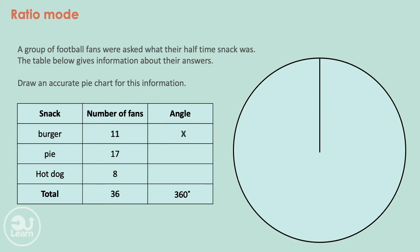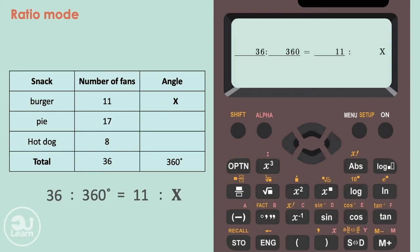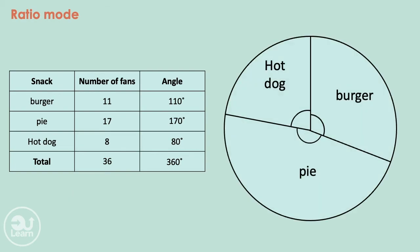Now we can write our first ratio as 36 to 360 degrees, and the equivalent ratio of our first frequency, which would be 11 to our unknown angle. These are the values we put into our calculator. We press equals, and our answer is 110 degrees for burgers. To find the remaining angles, we apply the same technique to the remaining frequencies, giving us 170 degrees and 80 degrees. I'm very aware that this question can also be done in a few different ways, and some of you may have recognized that the relationship between the frequency and the angle is that the angles are 10 times bigger. However, the relationship isn't always that straightforward for all questions, and that's why I'm showing you this technique.